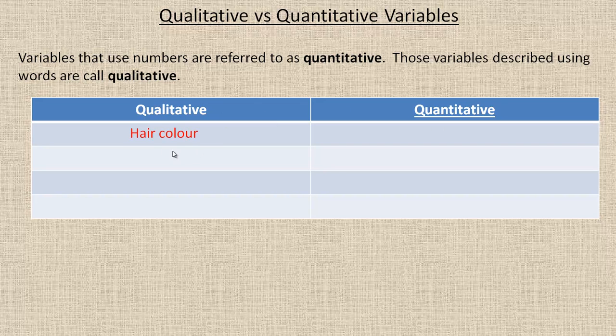Let's do the qualitative first. One example would be hair color. That's a qualitative variable. It is non-numerical. Your hair, as I said in the example, could be blonde, brown, red, white, black. Lots of different colors but they're non-numerical.